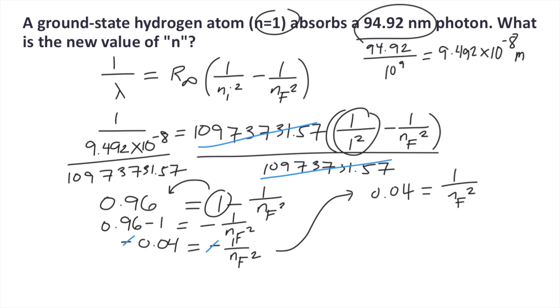How do we solve for nf? Cross multiply. Transfer nf to the left side, so 0.04 nf squared equals 1. Divide both sides by 0.04. On the left side, nf squared equals 1 divided by 0.04, which is 25.